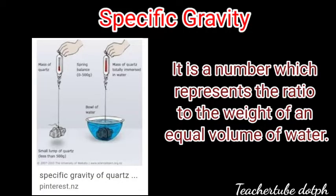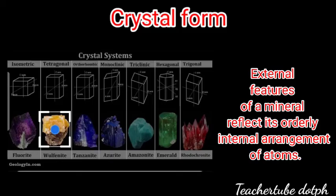The next physical property is specific gravity. It is a number representing the ratio of the weight of a mineral to the weight of an equal volume of water. Two weights are measured: first when the mineral is not submerged in water, and next when it is submerged in water. That ratio gives us the specific gravity.